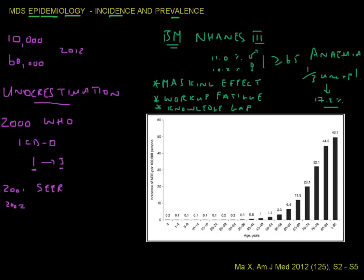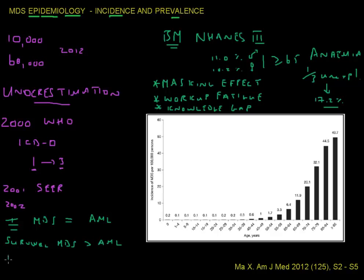For an informative comparison: if you look at the incidence of MDS versus acute myeloid leukemia (AML), they are very similar. However, if you look at survival, MDS patients have a much greater survival than AML patients. This means that in terms of prevalence, you will have a much higher proportion of MDS patients surviving, so the prevalence of MDS is thus also higher than that of patients with AML.